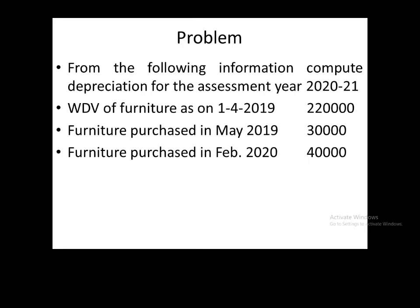Furniture purchased in May 2019 for 30,000 — if it has not been sold, full depreciation is to be charged. Next, furniture purchased in February 2020 — that is February and March, only two months, which is less than six months, less than 180 days. So on this furniture, half depreciation is to be charged.